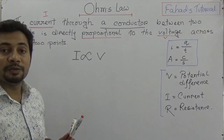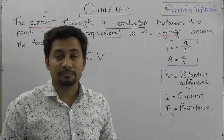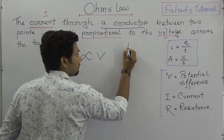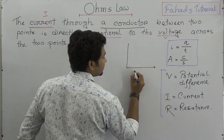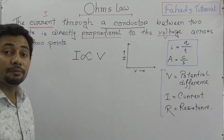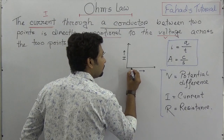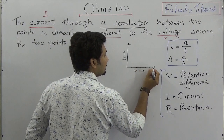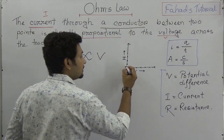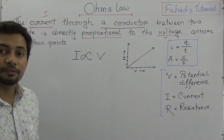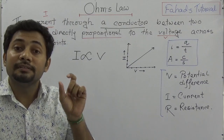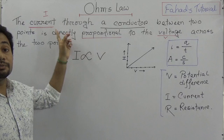George Simon Ohm is the scientist who discovered this. Through experiments, if we draw a graph with potential difference on the x-axis and current on the y-axis, we find that when the voltage is increased, the current also increases. So the graph is a straight line, showing that current is directly proportional to voltage.